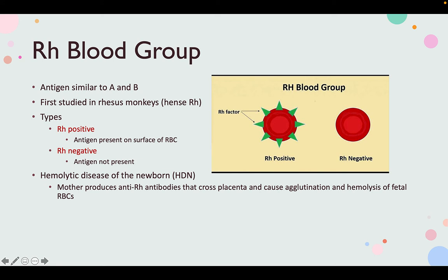Hemolytic disease of the newborn occurs when the mother produces anti-RH antibodies. The mother is RH negative but the baby is RH positive, so the mother produces anti-RH antibodies that cross the placenta and cause agglutination and hemolysis of fetal red blood cells, which is obviously not good for the baby.